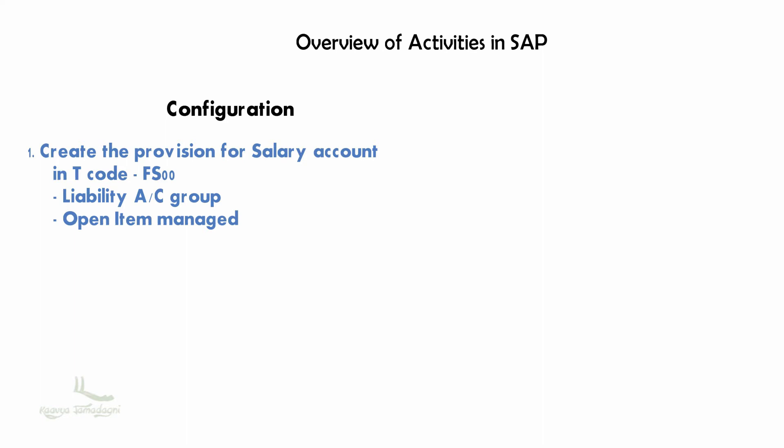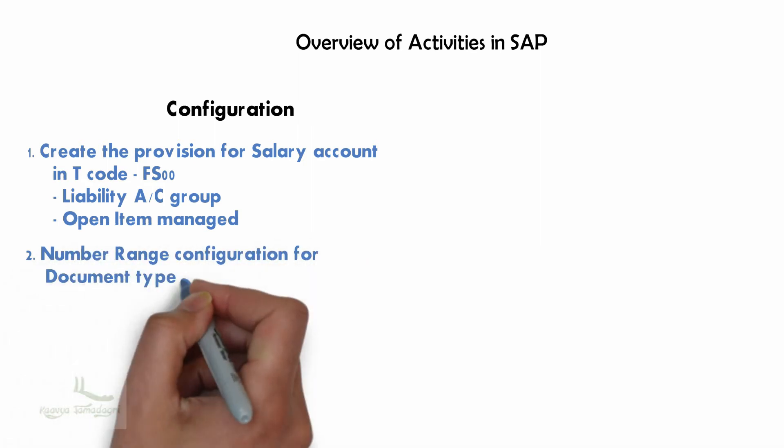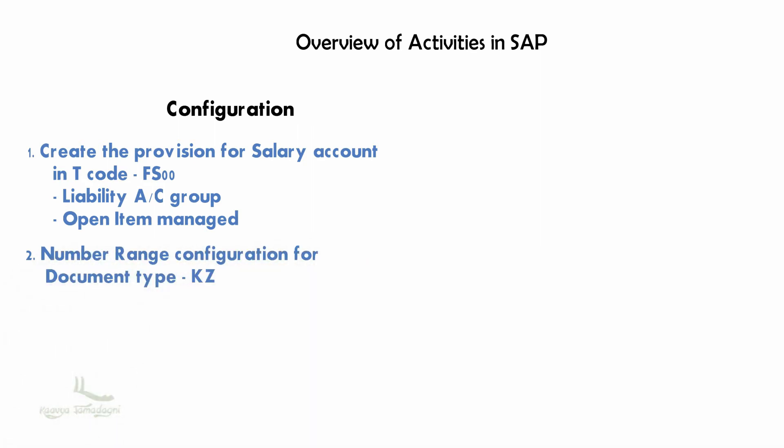Since we will be posting the outgoing payments in SAP as vendor payments, we need to make the number range configuration for document type KZ. Recall what you learned in the document type section of this course: K means vendor, Z means payments. So document type KZ means vendor payments.